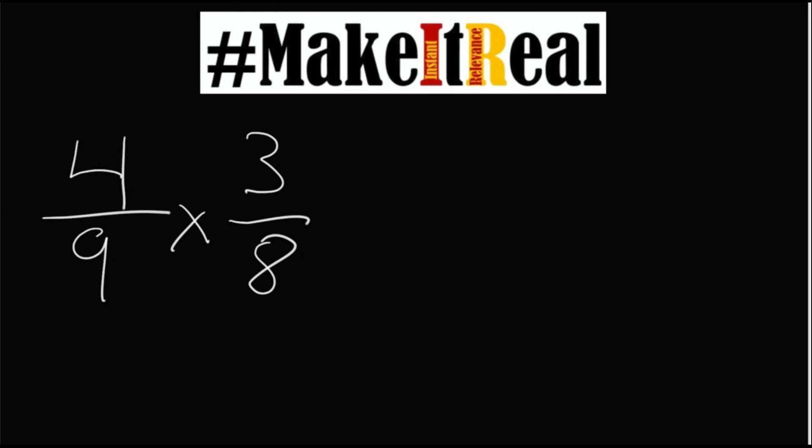So the first version of this instead would be to recognize that this multiplication symbol is really a shortcut for a multiplication of the top and of the bottom, the numerator and the denominator. If we rewrote that instead as 4 times 3 over 9 times 8...